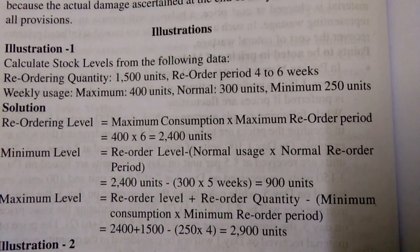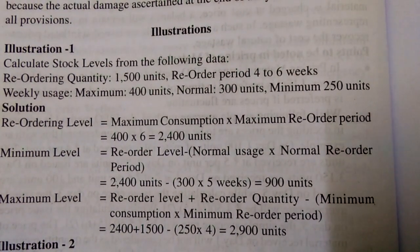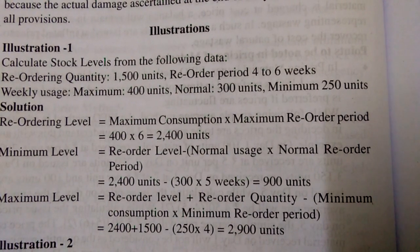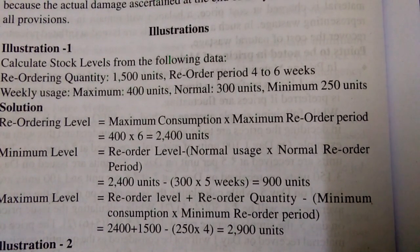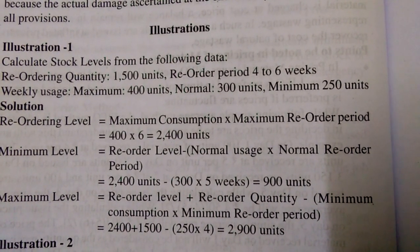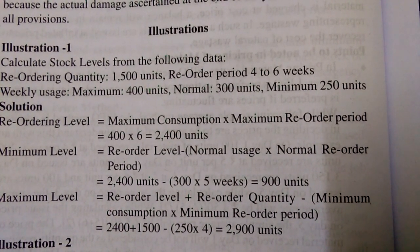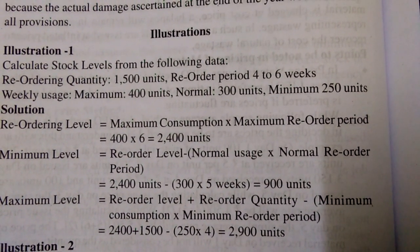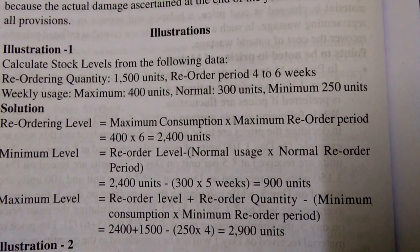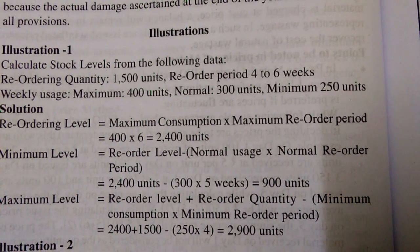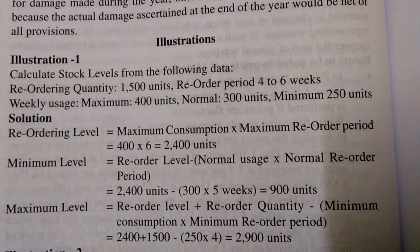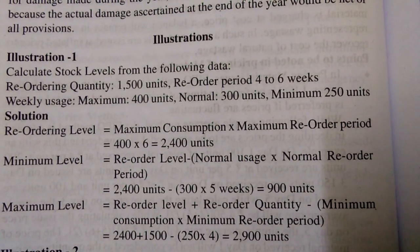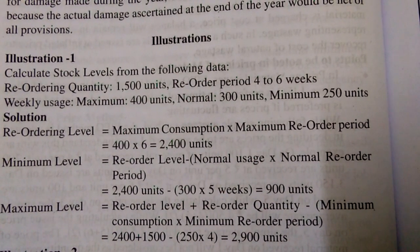Reorder period: minimum 4, maximum 6 weeks, so the average is 4 plus 6 divided by 2, that equals 5. Then 300 into 5 equals 1500, then 2400 minus 1500 equals 900 units.